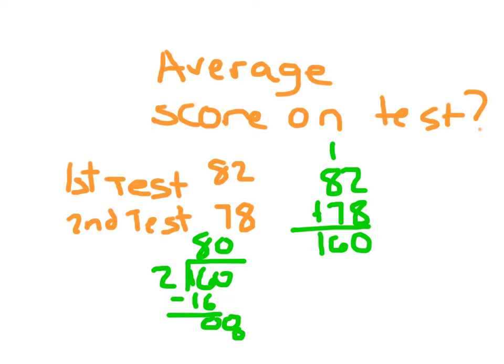And 0 times 2 is 0, and 0 minus 0 is still 0. So our average score is 80. This makes sense as halfway in between 78 and 82 is 80. And I was just averaging two numbers together, so it makes sense that that average is right there, right in the middle there. And that would be an average score on the test.